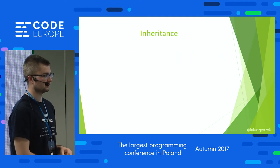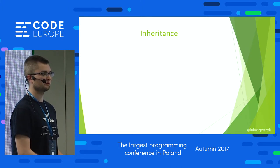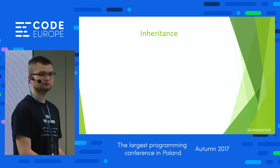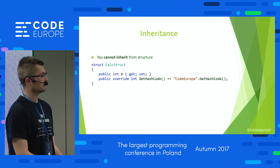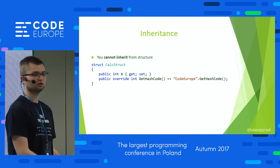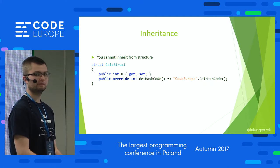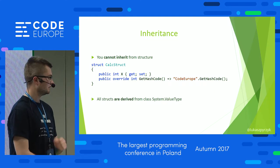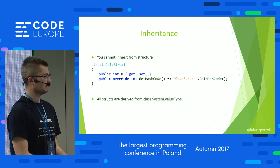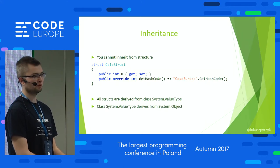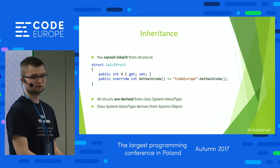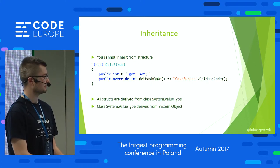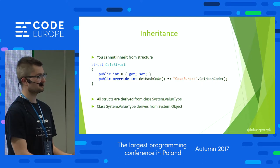The next point is about inheritance — a popular interview question. Can you inherit from a structure? No, you cannot. But why do we have methods like GetHashCode, ToString, or Equals on structures, and why do we override them? Where are they from? Structures are derived from System.ValueType, and System.ValueType is derived from System.Object. So structs do inherit from Object; however, this is done by the runtime and you are not allowed to do it yourself.